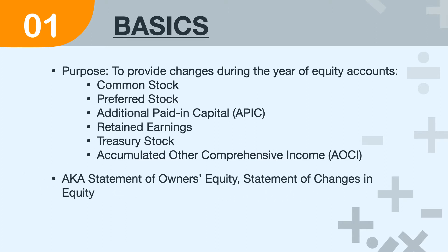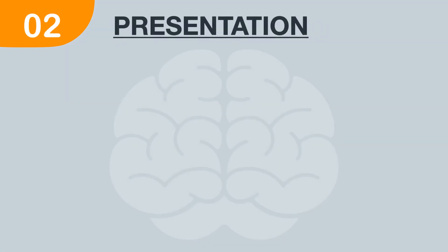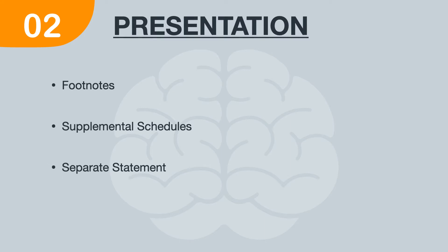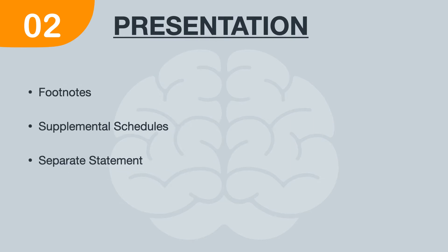The statement is also sometimes referred to as the statement of owner's equity or the statement of changes in equity. It is reported for a period of time. The statement of stockholders' equity can be represented either in the footnotes or the supplemental schedules, or as a separate statement. Most big businesses prefer to create a separate statement detailing each equity component and the changes associated with them. Let me show you that with a generic template.